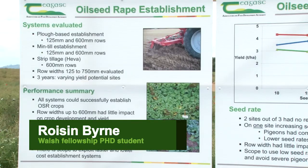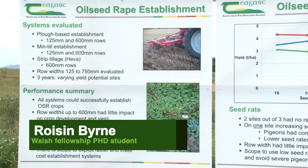My name is Roisin Byrne. I'm a Walsh Fellow PhD student based here in Oak Park in Carlow. My project is looking at establishment methods for oilseed rape. Oilseed rape is sown at a particularly busy time of year, so we want to look at the best ways to establish that at a faster pace and maybe lower costs if that's possible.